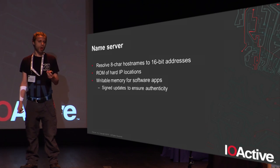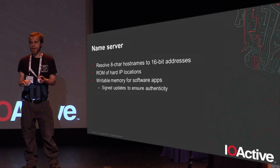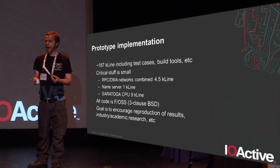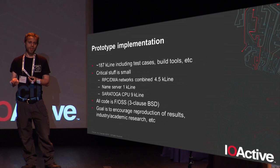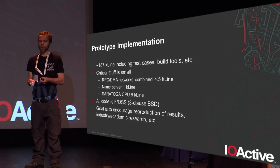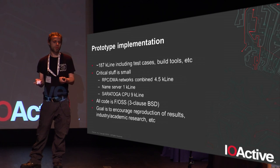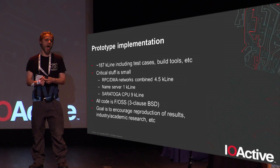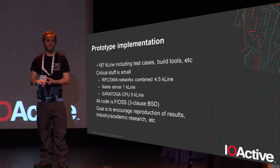All on-chip physical addresses for peripherals are baked in at compile or synthesis time in mask ROM; anything beyond that is written by signed updates from applications. The prototype is about 200,000 lines of code — I wrote 187,000, and have done a bit more since. That includes things like a custom JTAG library and unit test infrastructure. The actual critical core is very small: the networks are under 5,000 lines combined, the name server about 1,000, the CPU about 9,000, including whitespace and comments. All code is three-clause BSD open source. I would love for somebody to continue this work and write a paper telling me why it's bad or why it's great.